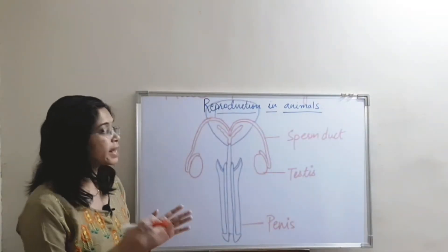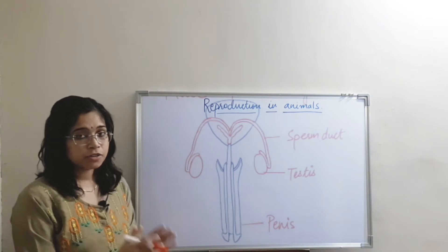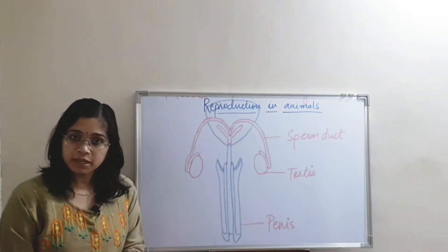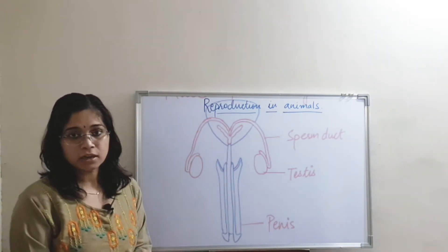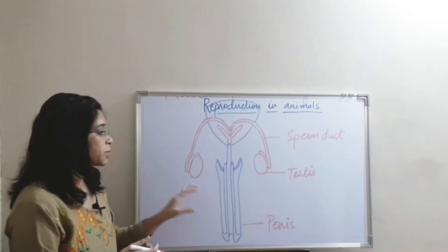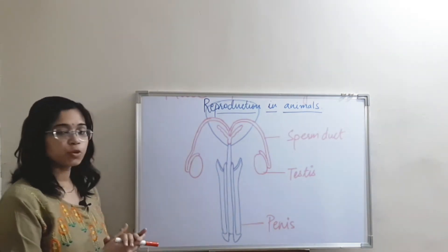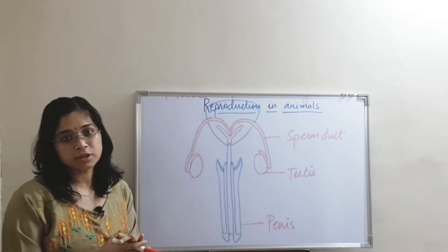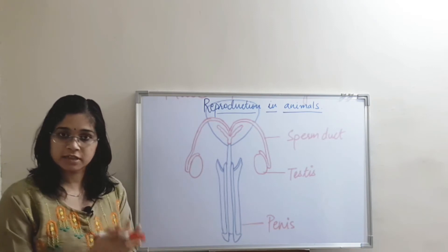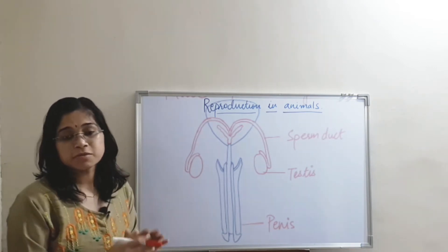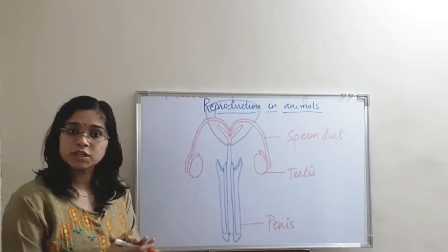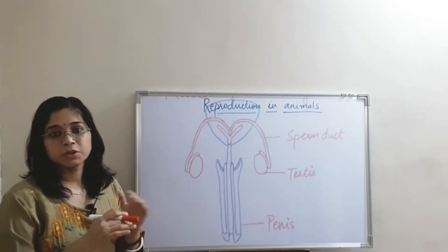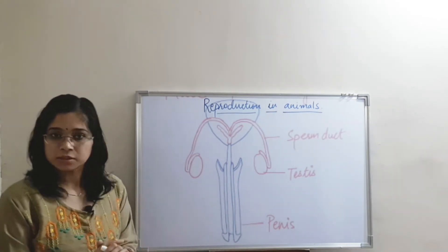Now we will see the male reproductive system. It is composed of a pair of testes, a sperm duct and a penis. The sperms are produced by the pair of testes. Many number of sperms are produced at the same time. These sperms travel through the sperm duct and reach the penis, from where they go out of the body.